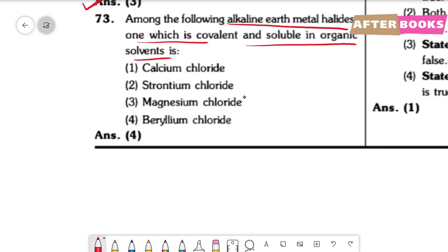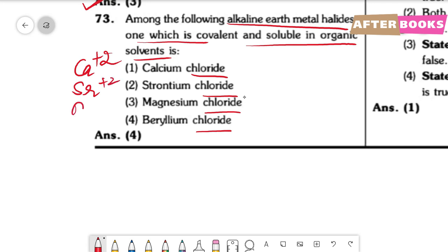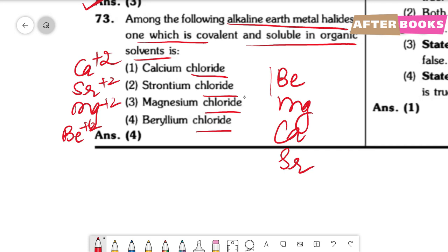Question number 73. Which alkaline earth metal halide is covalent and soluble in organic solvents? Covalent character is governed by Fajan's rules: smaller cation size gives greater covalent character. Among alkaline earth metals, beryllium is the smallest, so BeCl2 has the greatest covalent character. The correct answer is option 4.